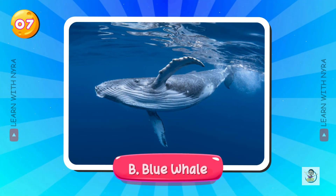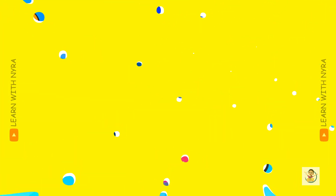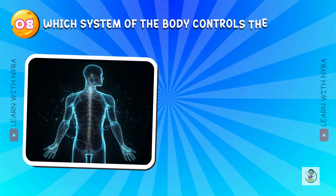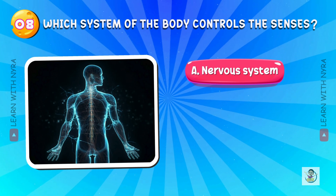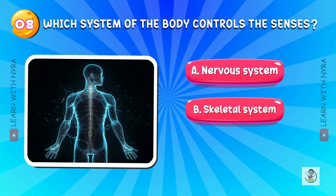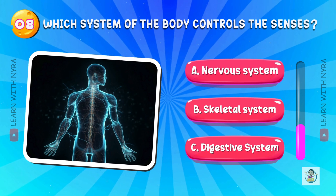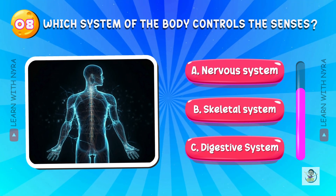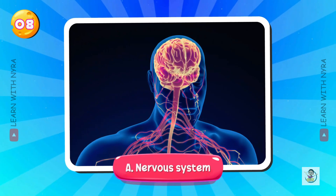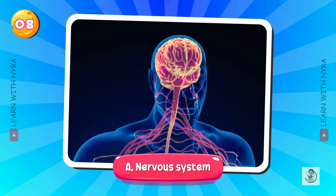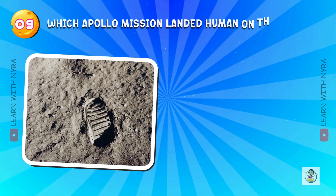And the answer is B. Blue whale. Which system of the body controls the senses? A. Nervous system, B. Skeletal system, C. Digestive system. And the answer is A. Nervous system.